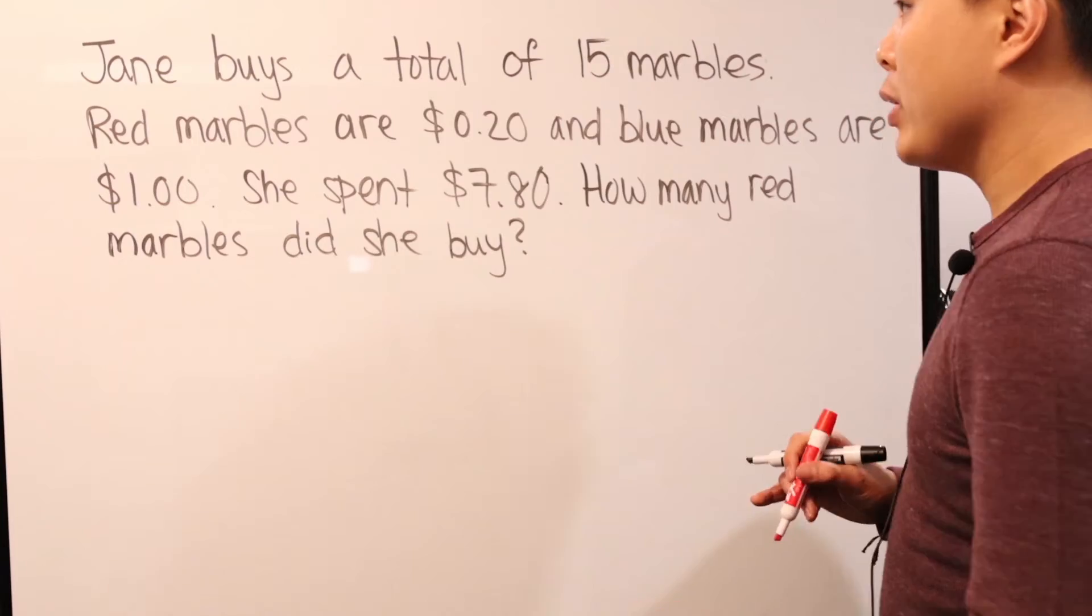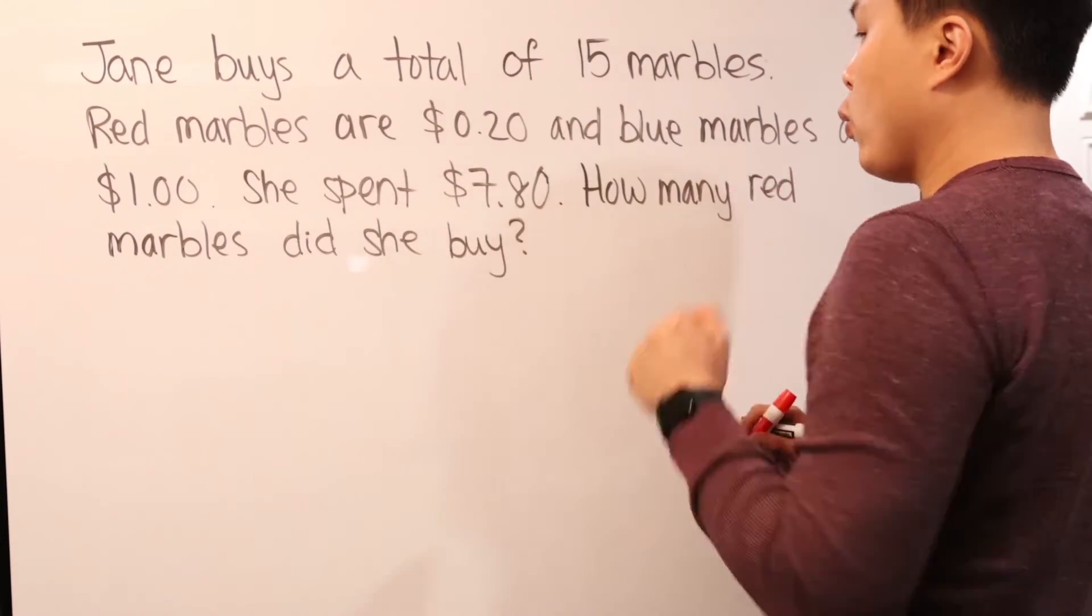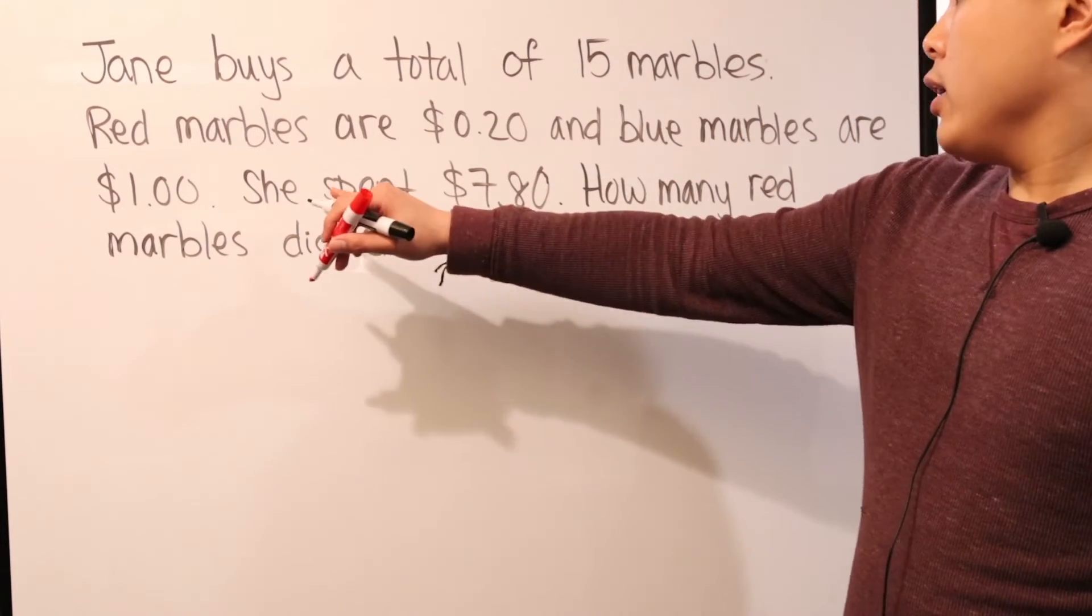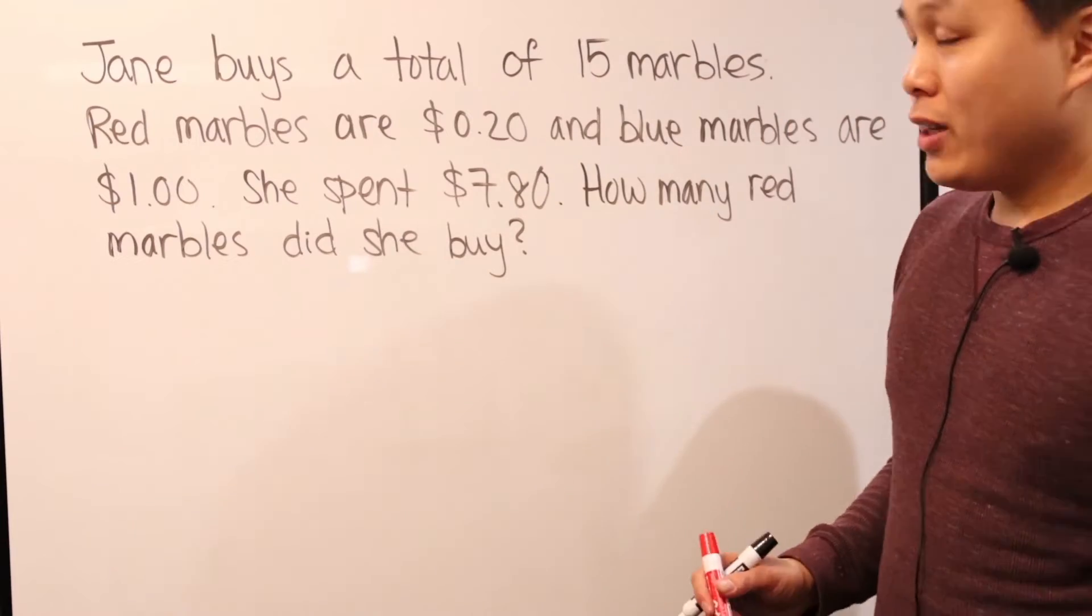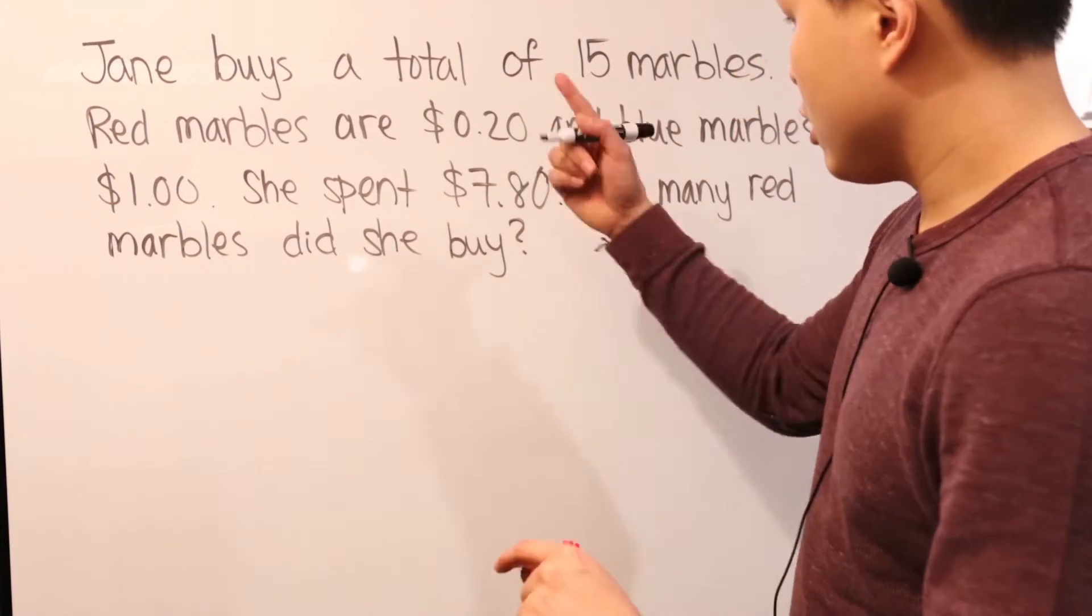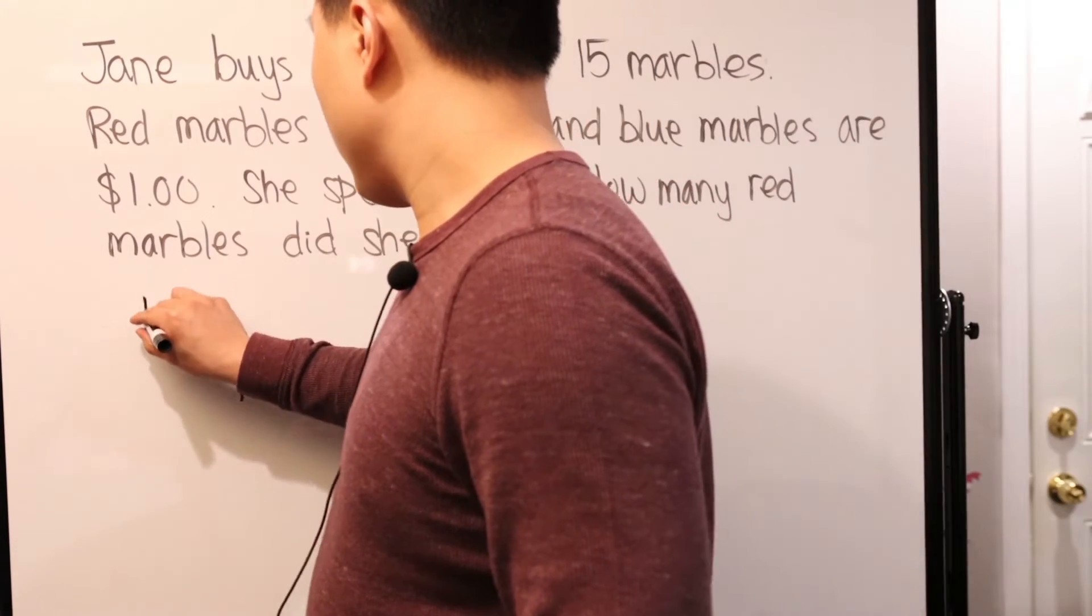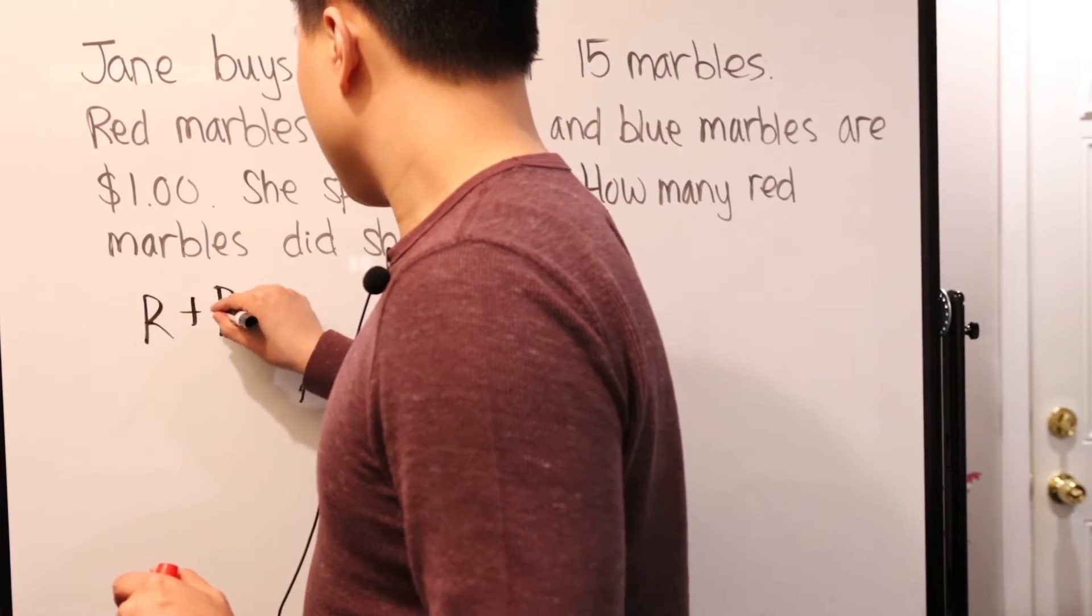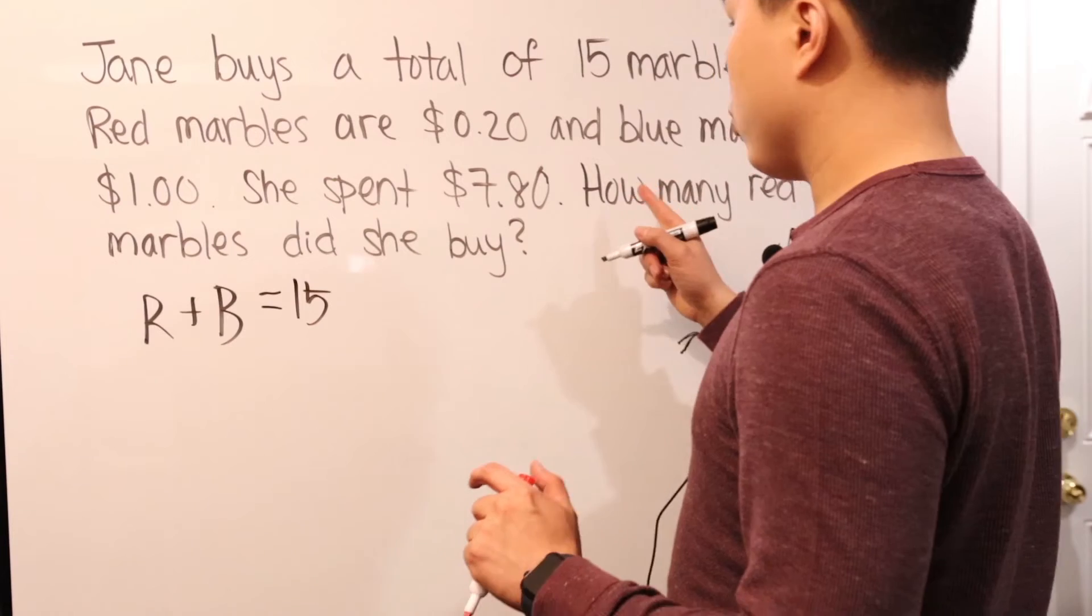Let's look at another one. Jane buys a total of 15 marbles. Red marbles are 20 cents and blue marbles are a dollar each. She spent a total of $7.80. How many red marbles did she buy? Now, this one, yes, you can solve it with system of equation. Once again, we can rewrite the system of equation. We know that red and blue, let's just say R is the number of red marbles plus B is the number of blue marbles. And then we know that that's a total of 15.